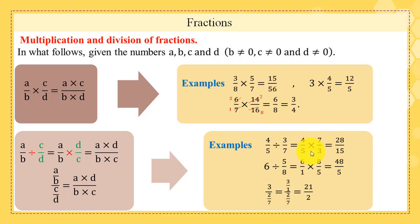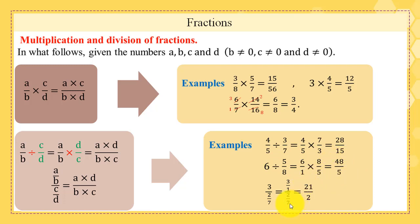Example: 4/5 ÷ 3/7 = 4/5 × 7/3 = (4×7)/(5×3) = 28/15. Similarly, 6 ÷ 5/8: write 6 as 6/1, so 6/1 ÷ 5/8 = (6×8)/5 = 48/5. Finally, (3/2)/7 = 3/(2×7) = 3/(1/(2/7)) = (3×7)/2 = 21/2.